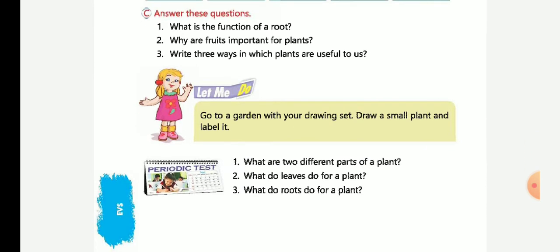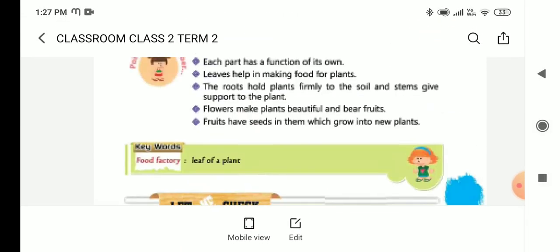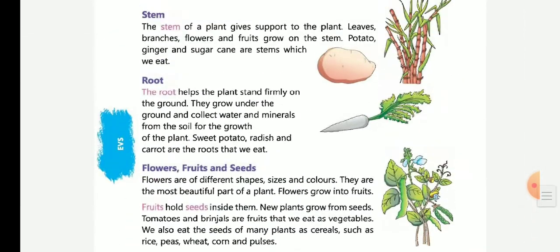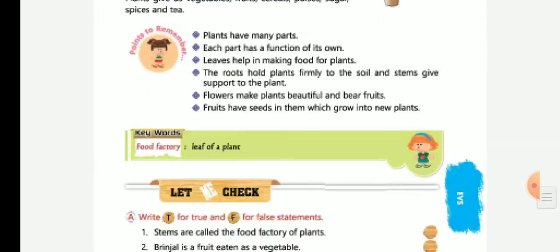What do leaves do for a plant? Leaves make food for the plant, very good. What do roots do for a plant? The root helps the plant stand firmly on the ground. So this is the answer.